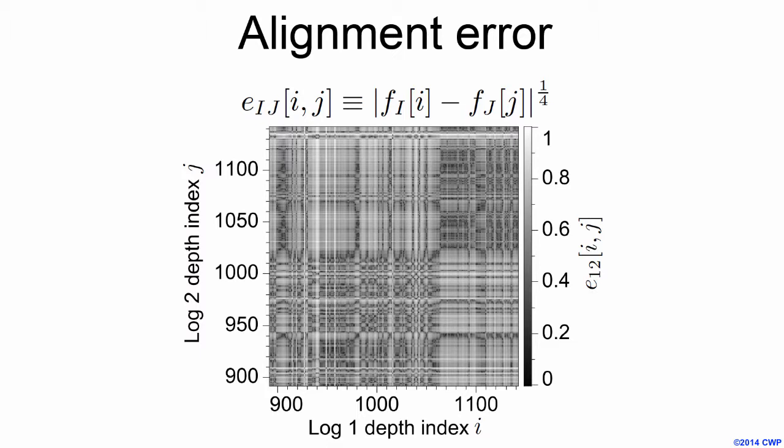When using dynamic warping to correlate well logs, it is common to use the L2 norm in the alignment error calculation. The L2 norm squares the differences between the log values, so when large measurement errors are present, alignment errors become huge. For this reason, we chose to use a smaller value of a norm. Through experimentation, we found that the L1 quarter norm works best for our specific data set.